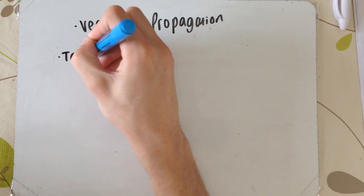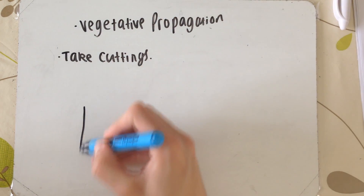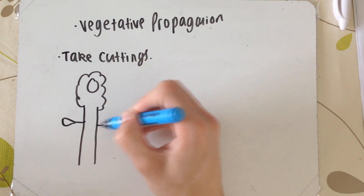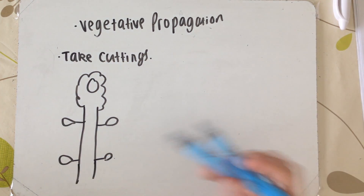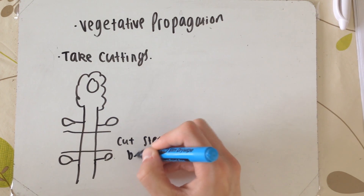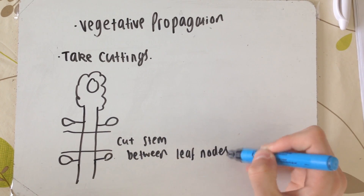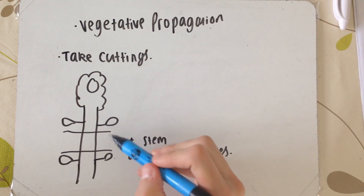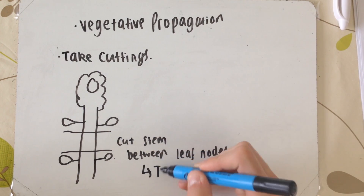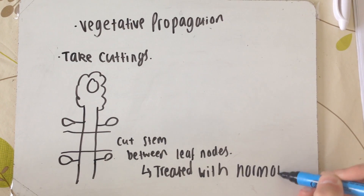Now we've seen natural vegetative propagation, we're going to talk about artificially doing it — humans editing plants to allow them to do this. The first method is taking cuttings. A section of the stem is cut in between the leaf joints, the leaf nodes of a plant. This can then be treated with root hormones and planted to encourage growth. Over time, if you keep doing this, you'll just be getting clones — genetically identical copies of the same original plant.